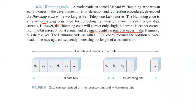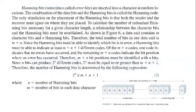The Hamming code, like all FEC codes, requires the addition of overhead to messages, increasing the length of the transmission. Hamming bits are inserted into a character at specific locations. The combination of data bits and Hamming bits is called Hamming code. The only stipulation on placement of Hamming bits is that both the sender and the receiver must agree on where they are placed.